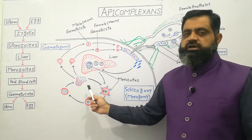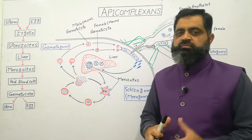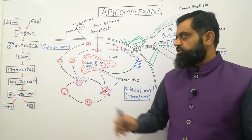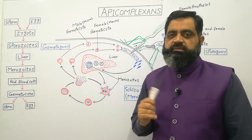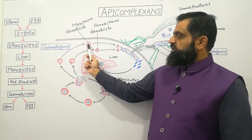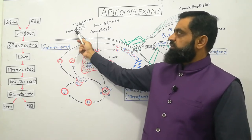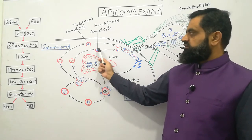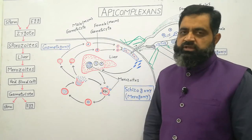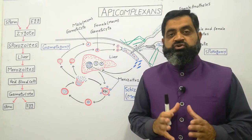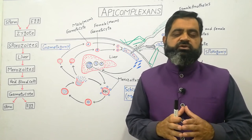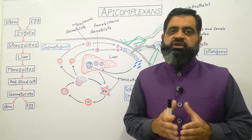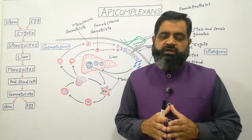Some of the merozoites released from red blood cells, instead of multiplying further, start a new process known as gametogony. During gametogony, these merozoites change into male and female gametes. In one red blood cell, a merozoite converts into a male gametocyte or micro-gametocyte, while in another red blood cell a merozoite becomes a female or macro-gametocyte. Plasmodium is preparing these gametes because another mosquito will come to suck the blood and allow them to enter a female Anopheles.